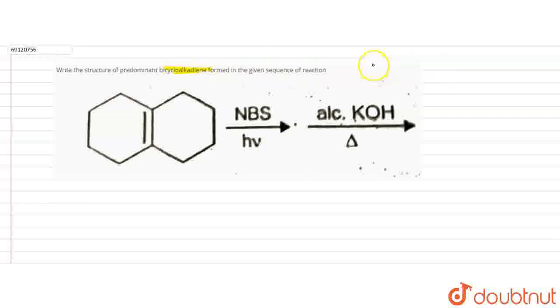What is NBS? NBS is N-Bromosuccinamide. If you want to know the structure of NBS, this is the structure. NBS is the reagent used here.